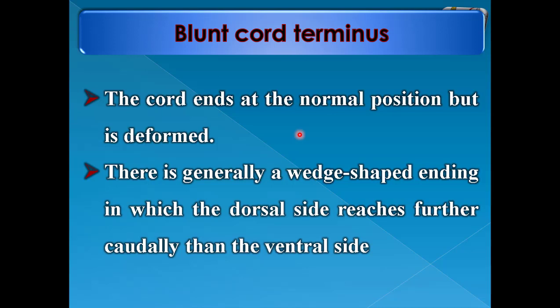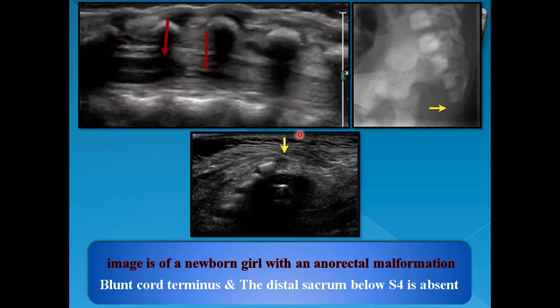Blunt cord terminus: the cord ends at the normal position but is deformed. There is generally a wedge-shaped ending in which the dorsal side reaches further caudally than the ventral side. The shape of the lower end of the conus medullaris is deformed, with extension of the dorsal aspect more than the ventral. This is associated with caudal regression syndrome with absent distal sacrum — below S4 there are no vertebrae and the coccyx is also absent.